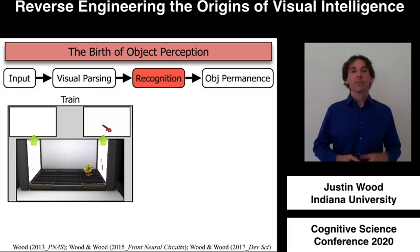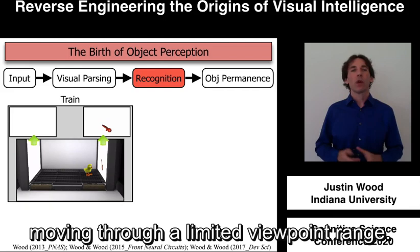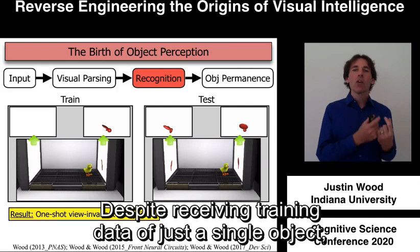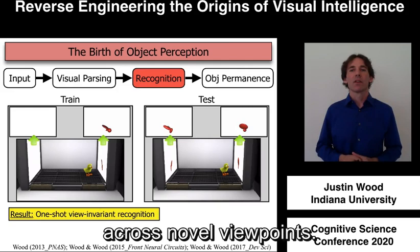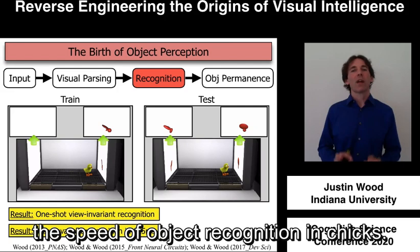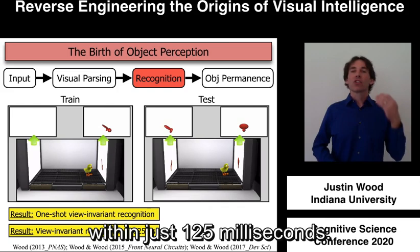We've also explored how newborn chicks develop view-invariant object recognition. We raised chicks in a world containing a single object moving through a limited viewpoint range, then tested whether the chicks could recognize the object across novel viewpoints. Despite receiving training data of just a single object, the chicks successfully learned to recognize objects across novel viewpoints, so chicks are capable of one-shot view-invariant object recognition. We also developed a new chronometry method for measuring the speed of object recognition in chicks, and we found that chicks can recognize objects rapidly, within just 125 milliseconds.